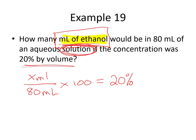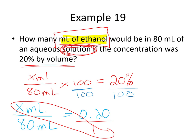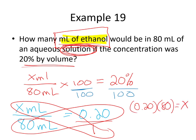To solve, I divide both sides of my equation by 100, which gives me x milliliters over 80 milliliters equals 0.20. Then I put 0.20 over 1 and cross-multiply to solve: 0.20 times 80 equals x. That gives us x equals 16. So the volume of my ethanol solute would be 16 milliliters.